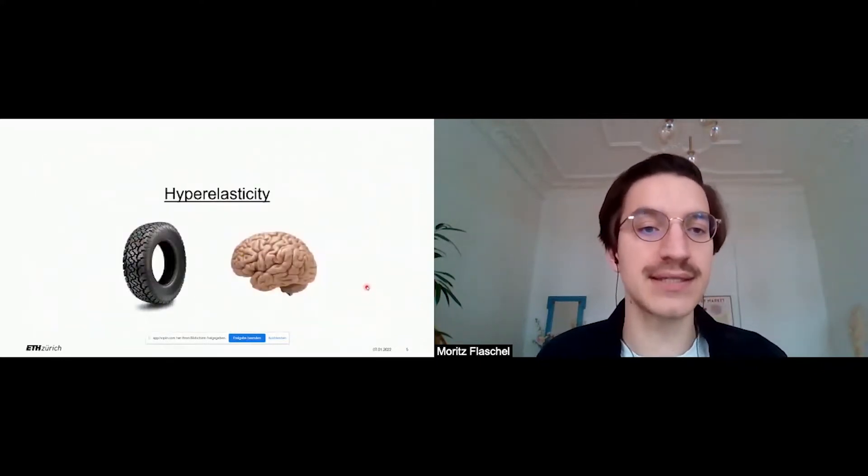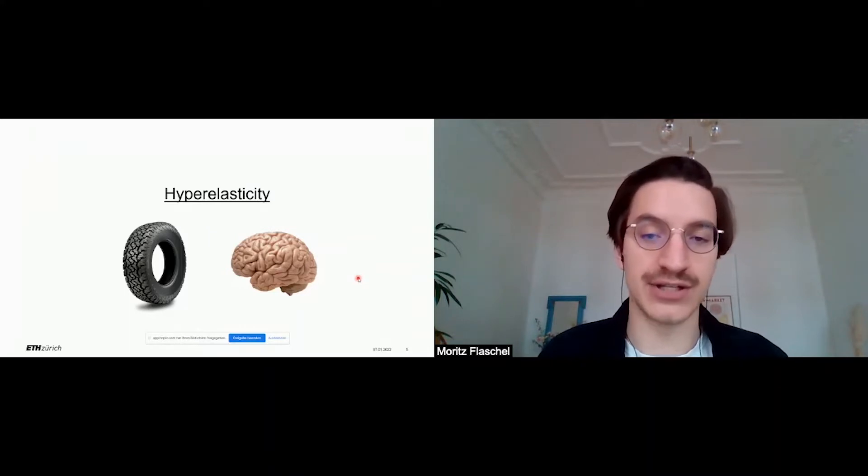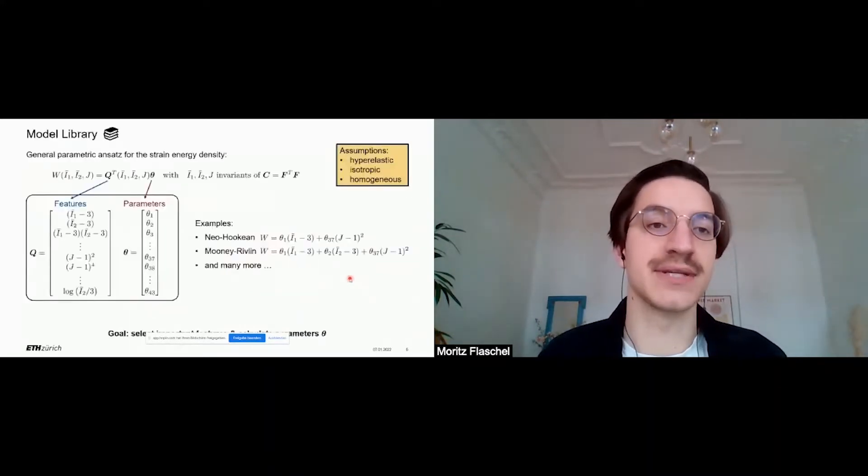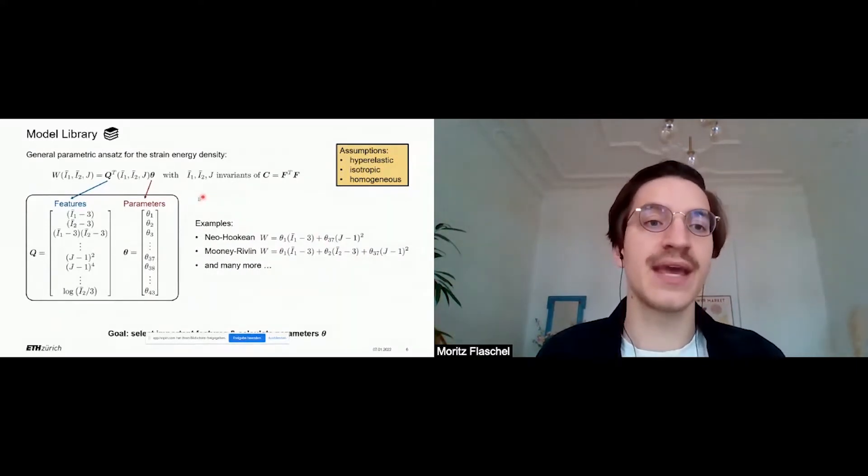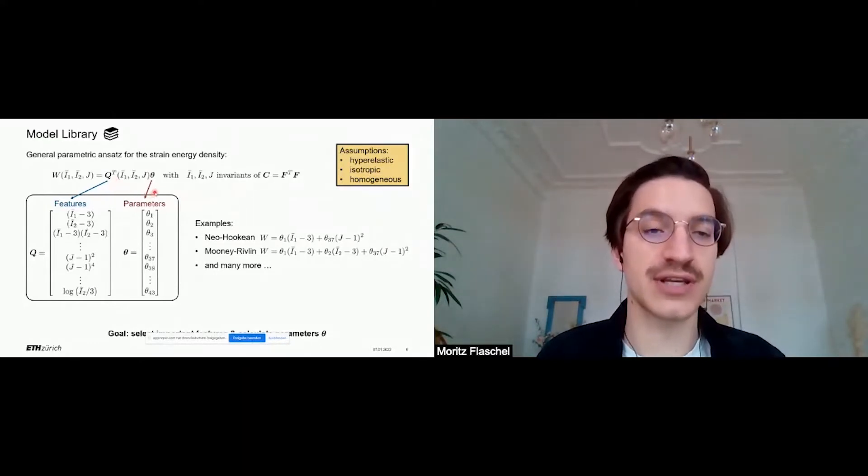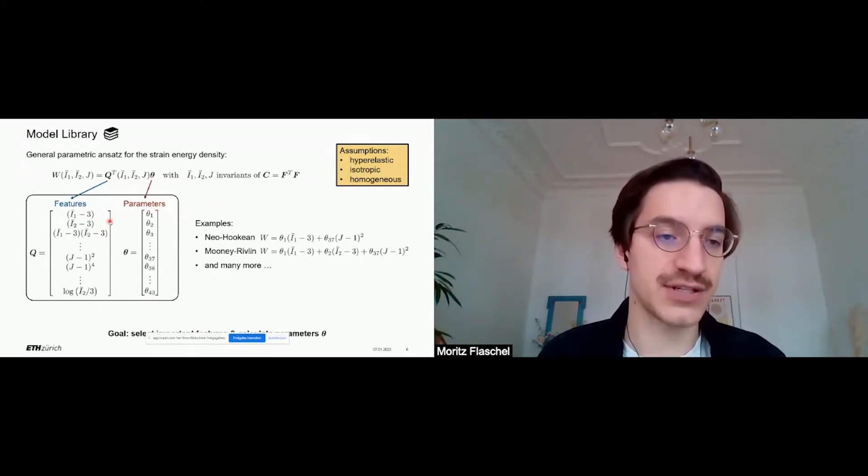In hyperelasticity, we typically assume that there is no dissipation when the material is deformed. However, the material may deform under very large deformations. The hyperelastic material behavior is characterized by the material's characteristic strain energy density function. We here assume that the strain energy density function can be expressed as a linear combination of so-called strain features, which are non-linear functions of the strain invariants, and so-called material parameters. The idea here is to choose a very large catalog of features such that a large variety of different material behaviors can be described.